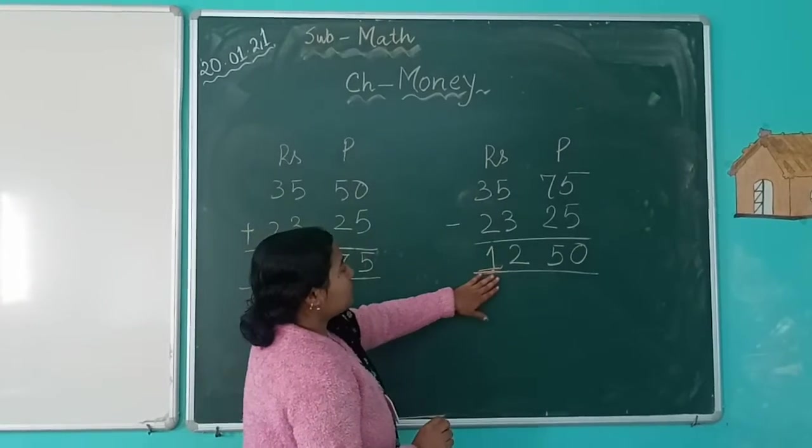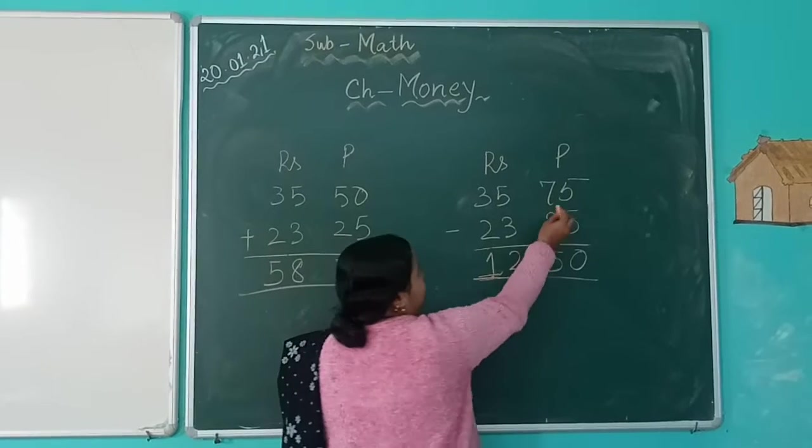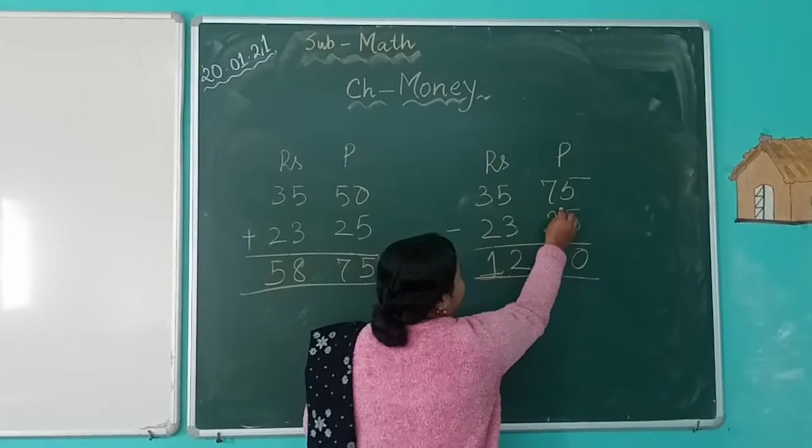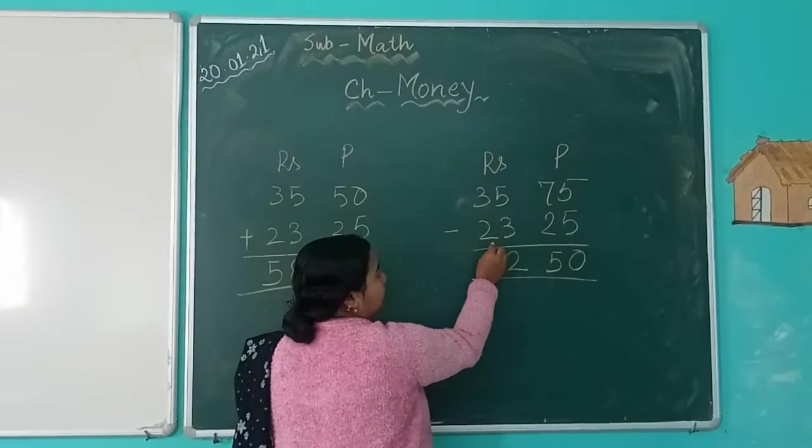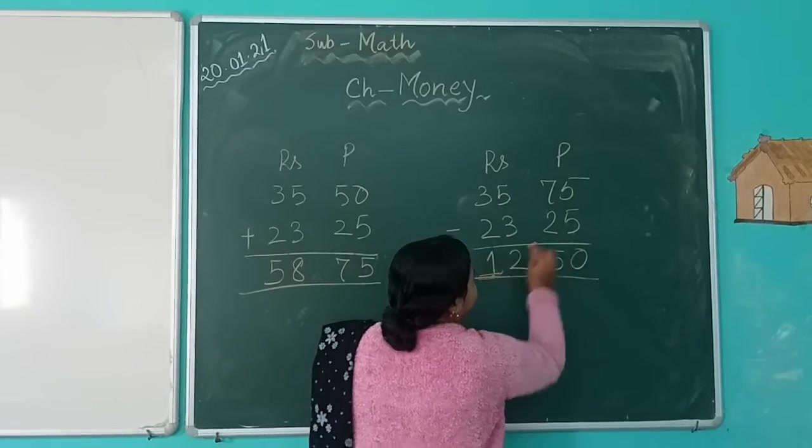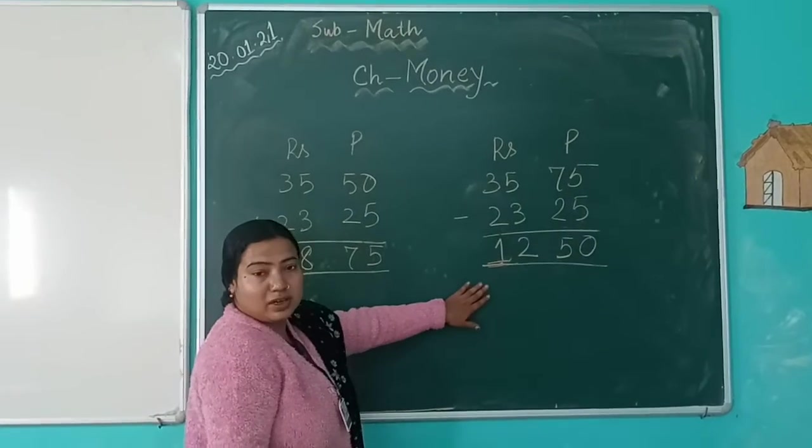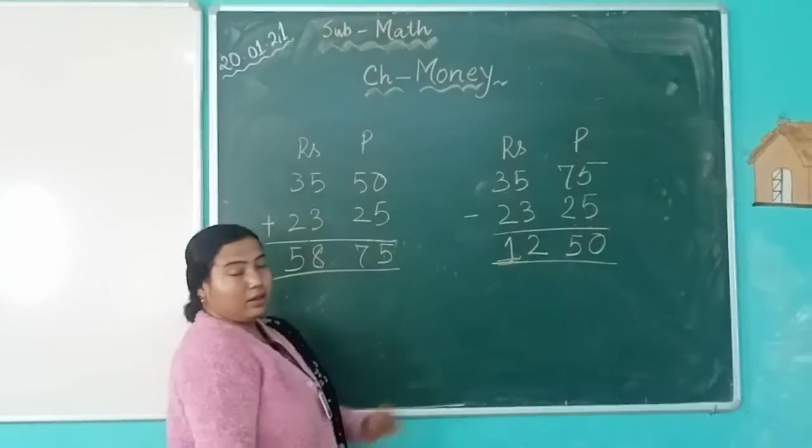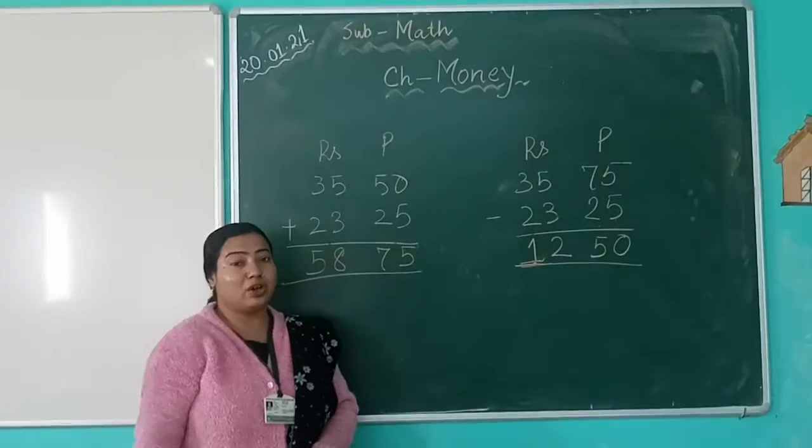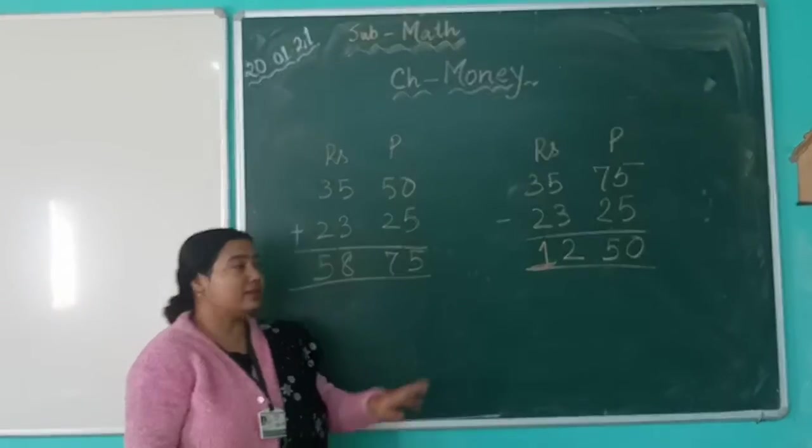Now do subtraction: 35 rupees 75 paisa minus 23 rupees 25 paisa. You subtract it. Hope you all enjoy and understand the chapter on money.